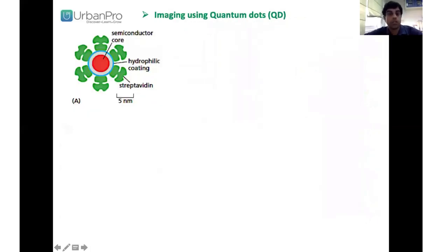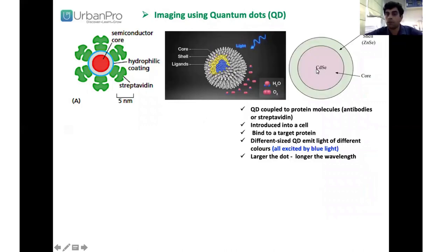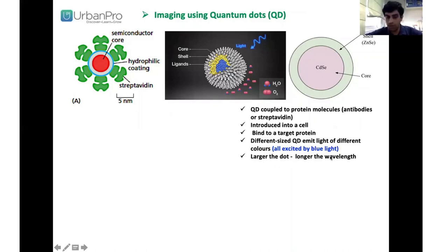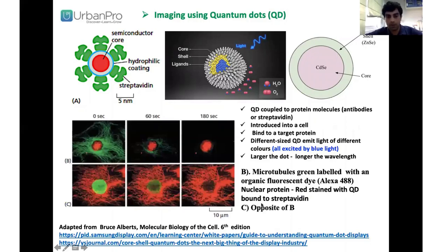The most recent probe type is quantum dots. Quantum dots have a semiconductor core, which can be cadmium selenide or zinc selenide, with a hydrophilic coating. The surface ligand is typically streptavidin or an antibody. Excitation is with a blue light source, and the larger the dot, the longer the emission wavelength. An example shows microtubules labelled with green quantum dots and the nucleus labelled with red dye — even after 180 seconds, the labeling of the nucleus remains intact.